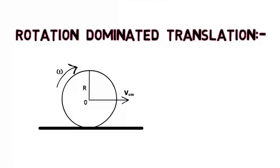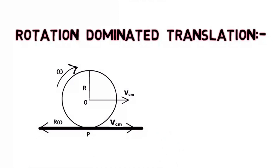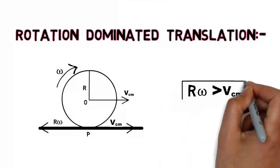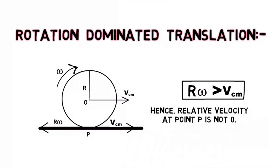In this case it tends to rotate the object in the forward direction. At the bottom most point — the point of contact, which is a very useful point in almost all rolling motion problems — we have R omega in the backward direction and VCM in the forward direction. By definition of rotation dominated translation, R omega is greater than VCM, so the bottom most point has a tendency to move in the backward direction.